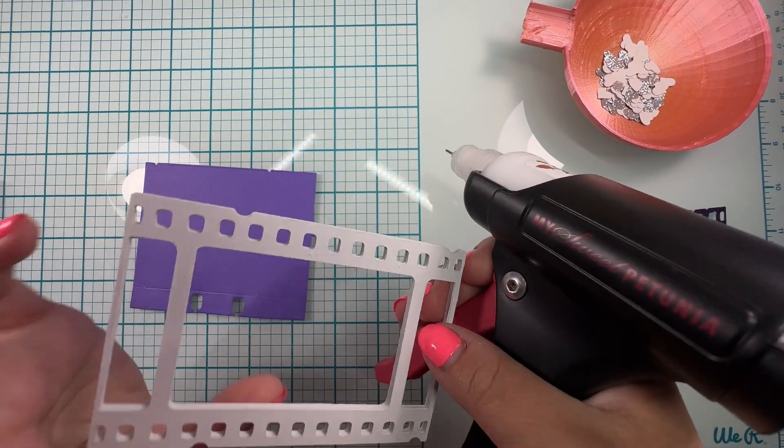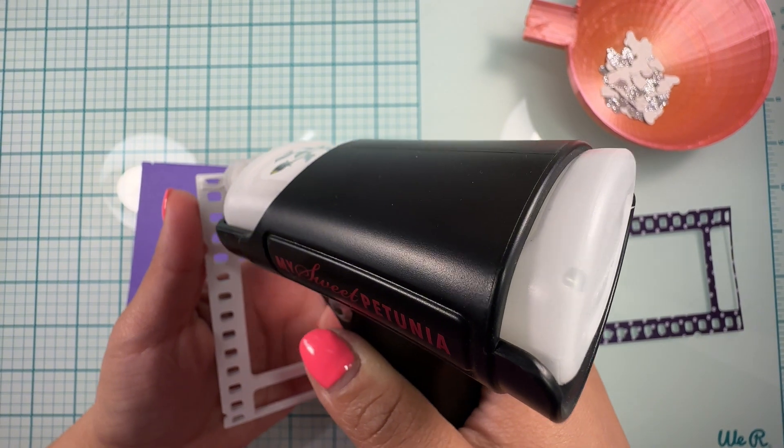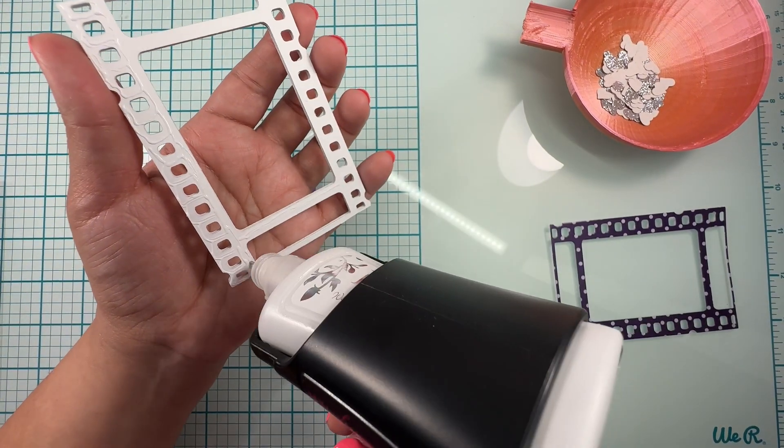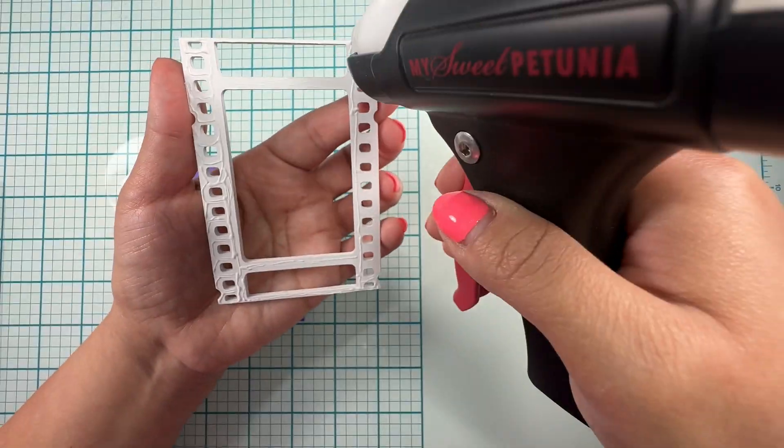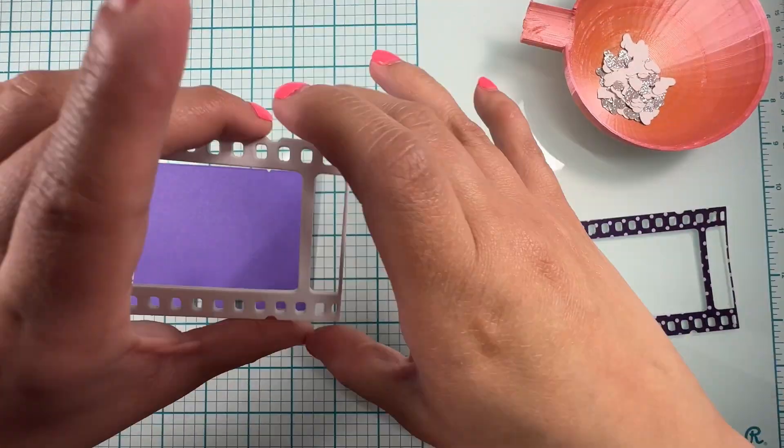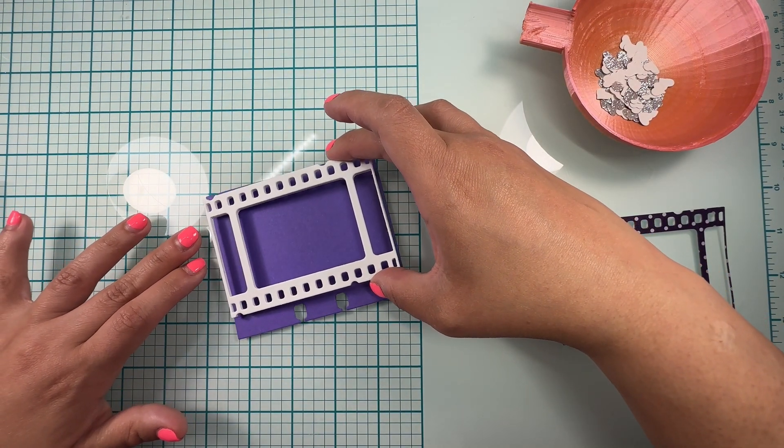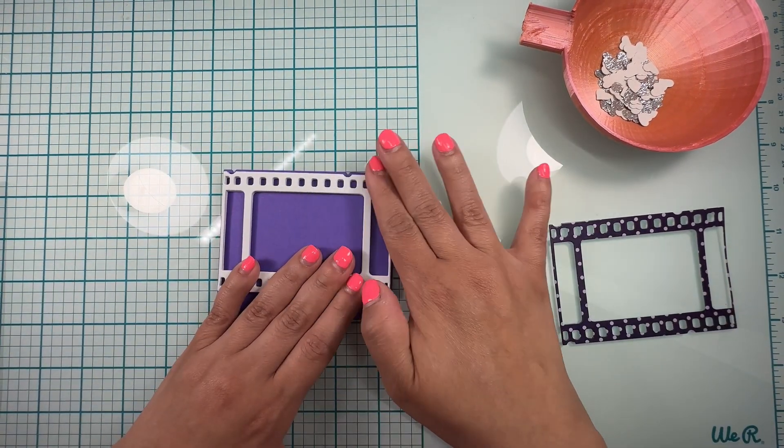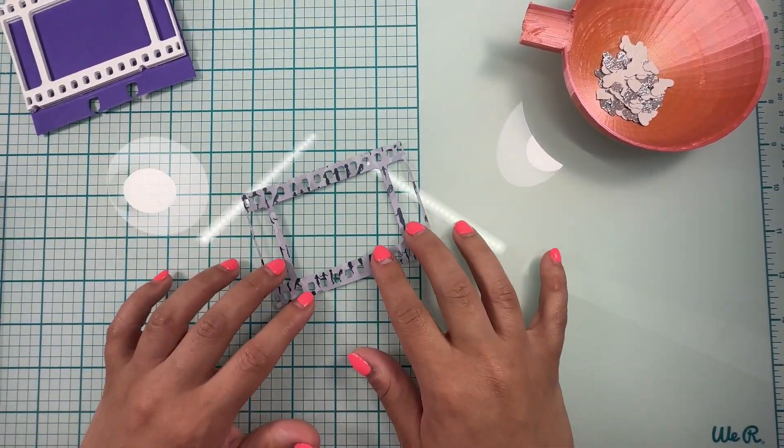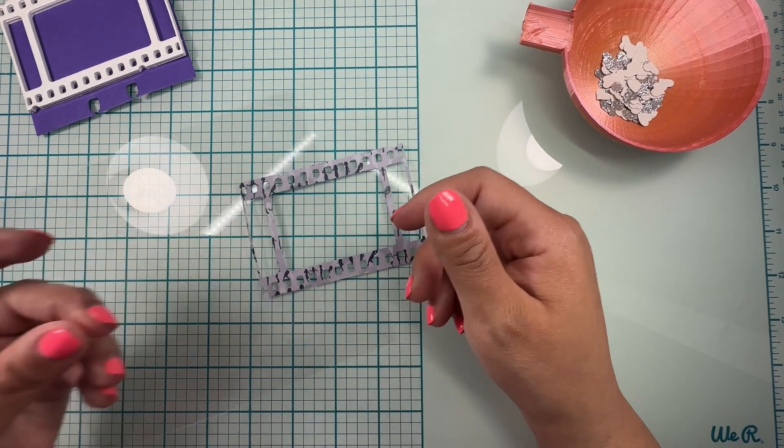So we're gonna go ahead and add some glue in this part. We're gonna go ahead and glue this down. I'm gonna set this aside for a minute and then on this part I am going to add the acetate.